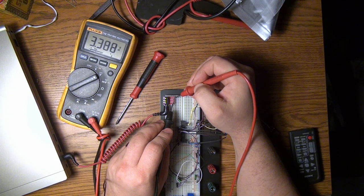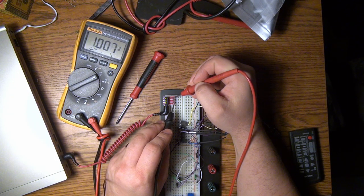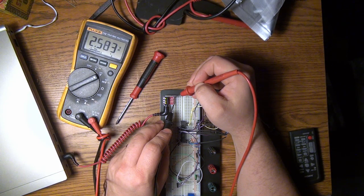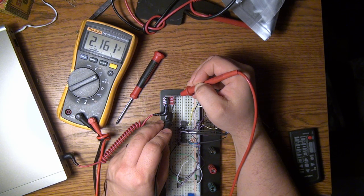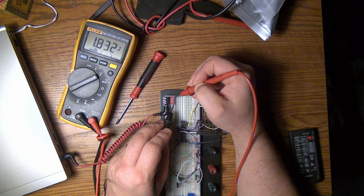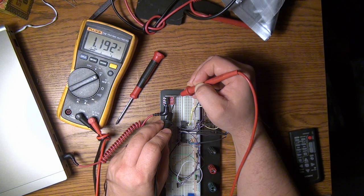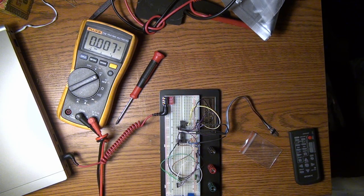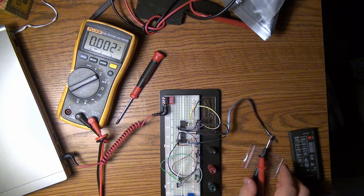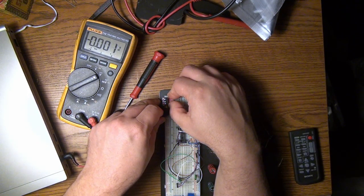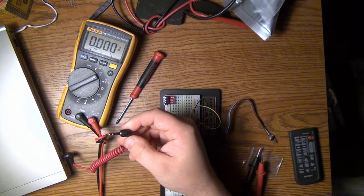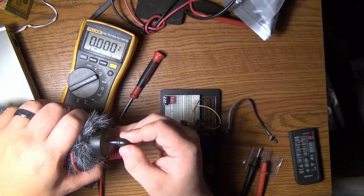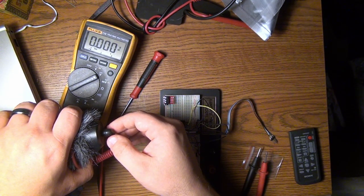I have the meter set to volts DC and we can measure the sleeve to the tip. We can see the voltage that is on there and it looks like that is just some residual voltage. I think what we need to do is plug this into a microphone to fool the port into thinking that there's actually a microphone attached.